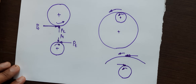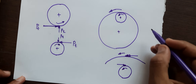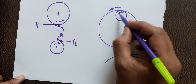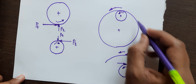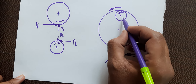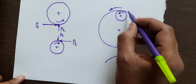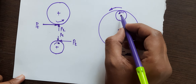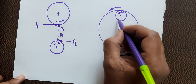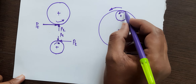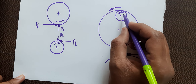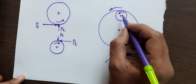Now if we go for the internal gear pair — see here, this is the internal gear pair. Here, for example, the driving member is the pinion and the driven member is the gear. In this case, as the pinion is rotating in anticlockwise direction, the gear will also rotate in anticlockwise direction, because it is an internal gear pair.